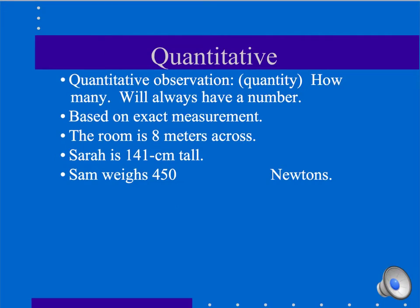The other kind of observations are quantitative observations. You can see the word quantity in the word. It's always going to include a number. It's going to be based on a measurement. So, for example, the room is 8 meters across or Sarah is 141 centimeters tall. They have units of measurement that go along with them.